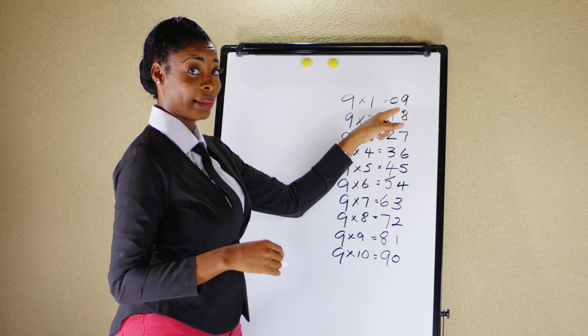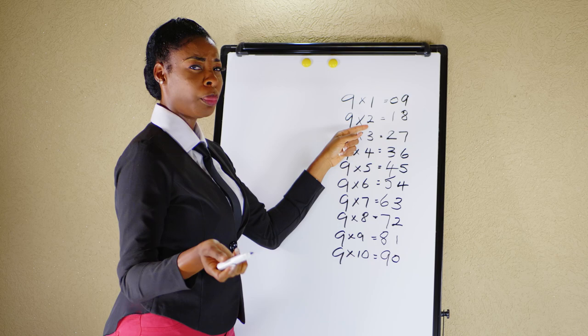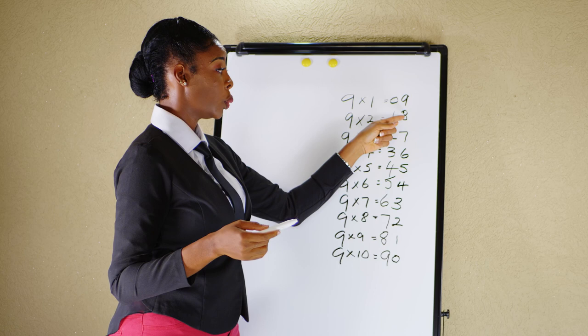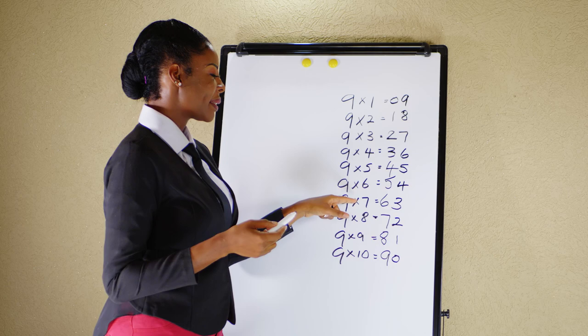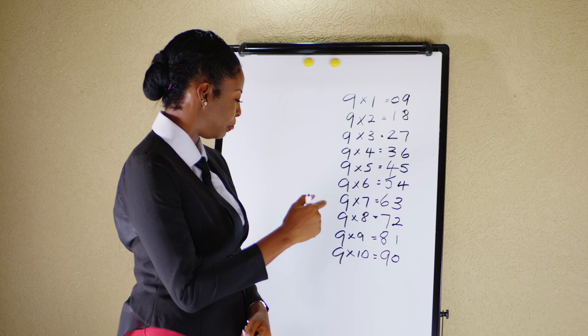But is it right? Nine by one is nine. Nine by two, bring out your calculators and you're trying to see if it is actually working. Nine by two, eighteen, nine by three, twenty-seven, nine by four, thirty-six, nine by five, forty-five, nine by six, fifty-four, nine by seven, sixty-three, nine by eight, seventy-two, nine by nine, eighty-one, nine by ten.